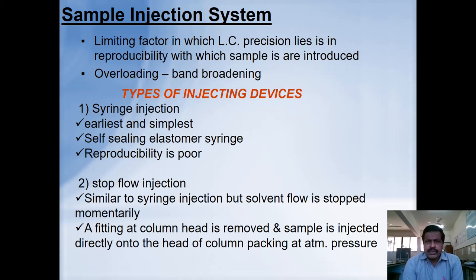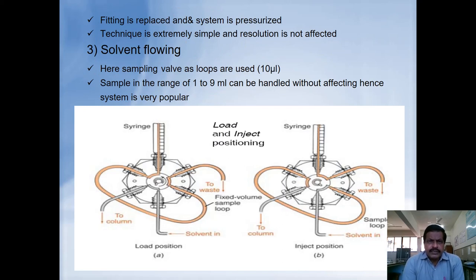The second technique is stop-flow injection, where the solvent flow is stopped momentarily. A fitting at the column head is removed and the sample is injected directly into the head of the column at atmospheric pressure, then the fitting is replaced and the system is pressurized. This technique is extremely simple and resolution is not affected. The third technique uses a sampling valve with loops, usually 10 microlitre. Samples in the range of 1 to 9 ml can be handled, making this system very popular.